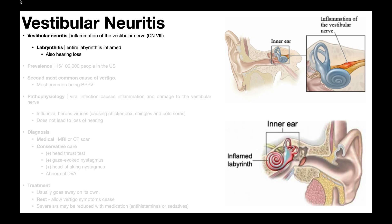Vestibular neuritis is a plain and simple hypofunction. It's going to be caused by inflammation of the vestibular nerve, or the vestibular portion of cranial nerve VIII. This is the nerve that transmits information from the semicircular canals, the utricle, and the saccule to the brain, where it's interpreted as equilibrium or balance.